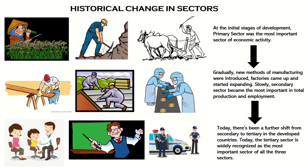With the passage of time, machines were invented and factories were established to manufacture various goods. Gradually, industries were established and the industrial sector employed more and more people. As a result of these changes, the secondary sector became more important in total production and employment. There has been a further shift from the secondary to the tertiary sector in developed countries.